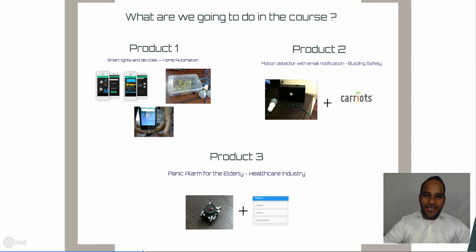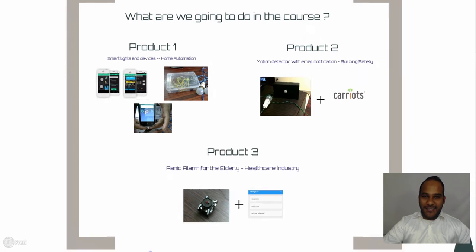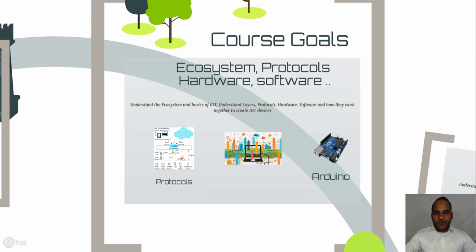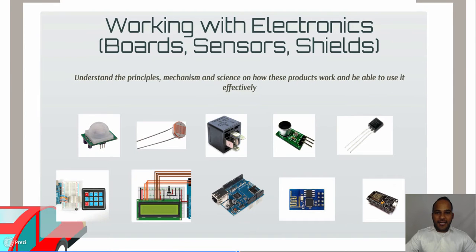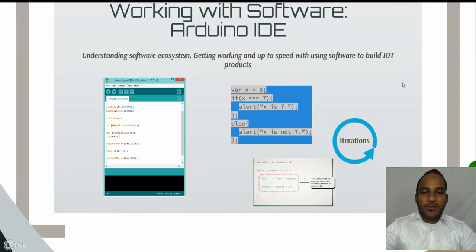Before we build these products, let's look at the course goals. First, we look at the ecosystem of IoT — the different levels of IoT devices, hardware like Arduino, and software like the Arduino IDE. We will understand how to use sensors, displays, relays, keypads, and most importantly how to connect your device to the internet using Ethernet shields, Wi-Fi shields, and NodeMCU.